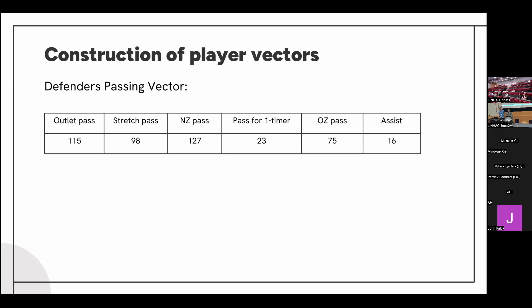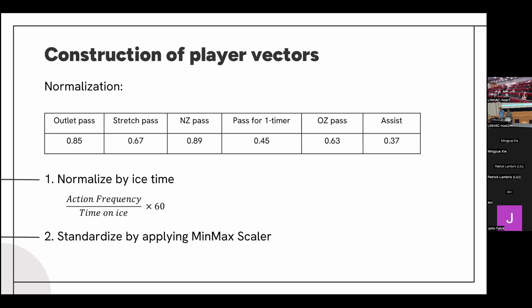We start by counting the frequency of each action and placing that in the vector. Next, we normalize these values by dividing the action frequency by the total time on ice for the specific player multiplied by 60, which is the total minutes in a game. This ensures that a player who has played many more games doesn't receive a higher skill level simply due to more ice time. We also standardize the values using a min-max scaler that keeps values in an interval from zero to one, to even out differences in frequency between different actions — for example, an outlet pass is done far more frequently than an assist.